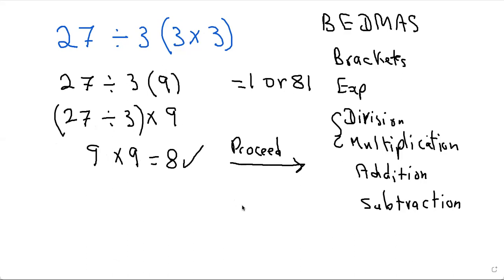The red flag or the wrong answer will be to say it's 27 divided by 3 times 9 is 27, and that gives me 1. That would be wrong.